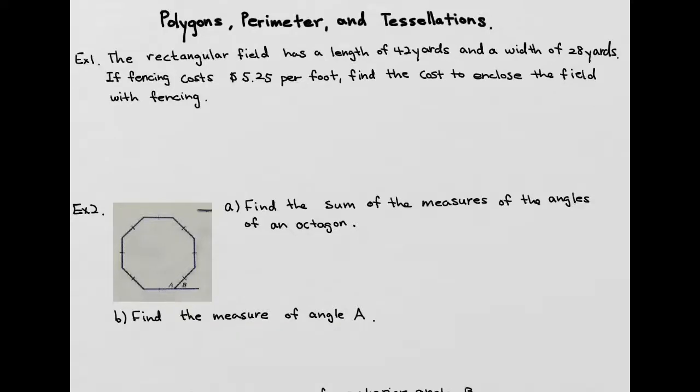This section we're going to talk about polygons and perimeter. First example, they're talking about a rectangular field that has a length of 42 yards and a width of 28 yards. In a geometric figure word problem, I always draw what's given and see what I need to do with that.